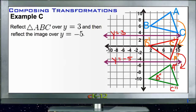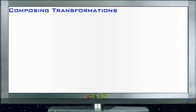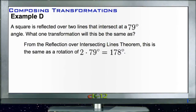So we have a double reflection: first over y = 3, then over y = -5. According to our rule, we could have just done a single slide encompassing the entire transformation. We can see that A, B, and C are in the same relative positions as A double-prime, B double-prime, and C double-prime — we could have just slid the original triangle straight down by a specific number of units.